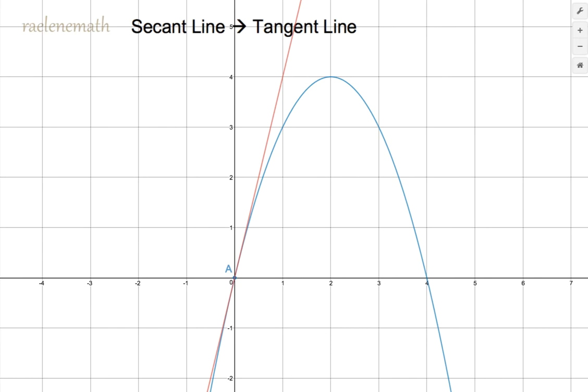So let's come up with another point. Let's call it point B and let's put it over here and let's move point B around. We can move point B where we like and we're going to come up with a secant line through those two points and drag point B around.